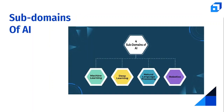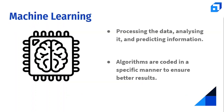AI has four major subdomains: machine learning, deep learning, natural language processing, and robotics. Machine learning (ML) is the science of computer programs that automatically learn from previous experiences and adapt to new challenges without human intervention. It is one of the most used and demanding fields of AI. ML algorithms are coded to perform tasks, analyze, and predict information from data, and can be divided into three types: supervised, unsupervised, and reinforcement learning.